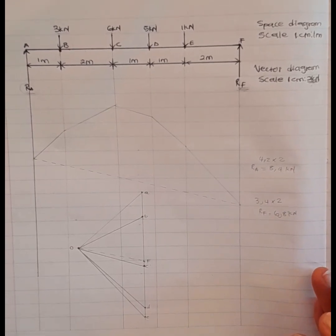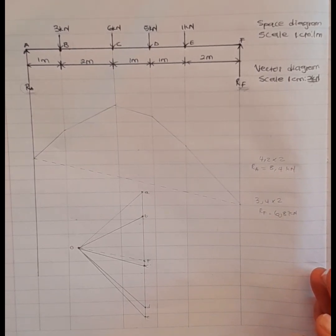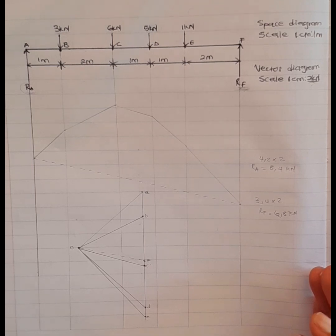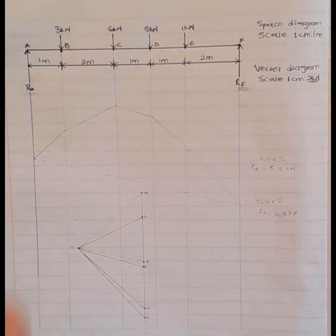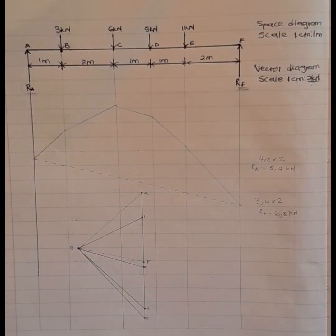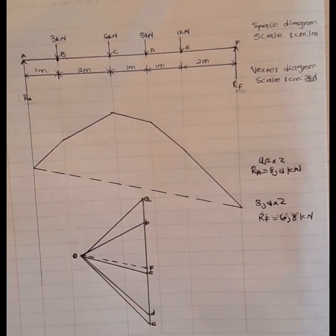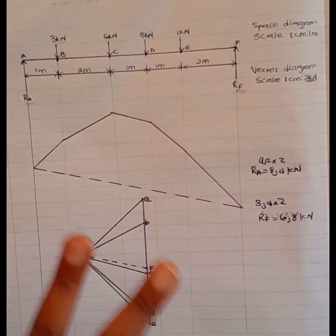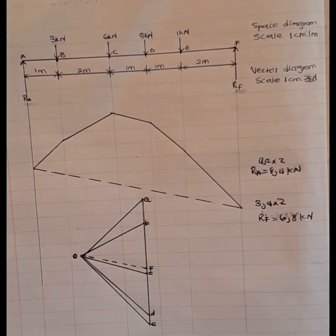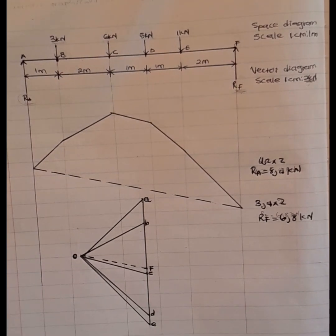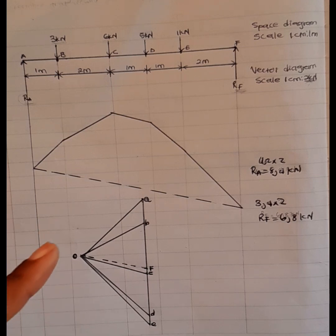So RA is 8.4 kilonewtons and RF is 6.8 kilonewtons. We are done determining the reactions graphically. I wanted to make these diagrams as visible as possible — thank you for watching. Make sure you hit the notification bell for more tutorials and subscribe to my channel. See you next time.